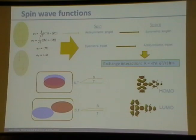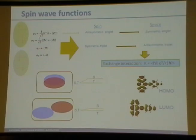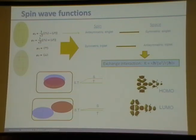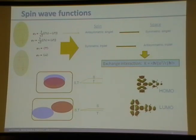To go further into the details of singlet fission, we need to talk about spin wave functions. Starting from basics: electrons are fermions and indistinguishable, which means the wave functions must be antisymmetric with respect to permutation or exchange. If you look at just the spin part for two electrons, there are four different ways to arrange their spins. Making these eigenfunctions of the exchange operator gives four eigenfunctions: one is antisymmetric with respect to exchange — that's the singlet — and three are symmetric — those are the triplets. That's where those names come from.